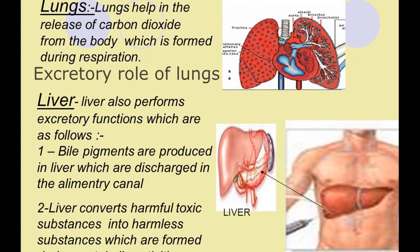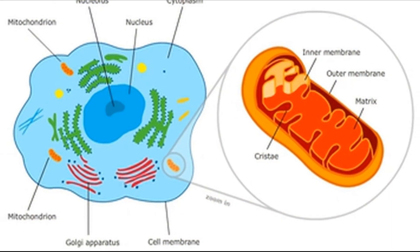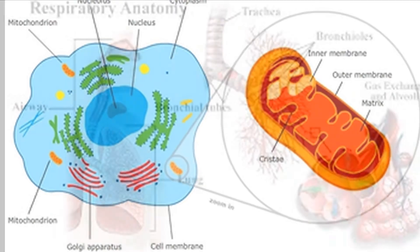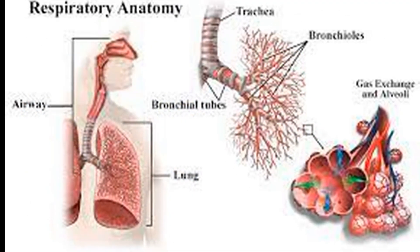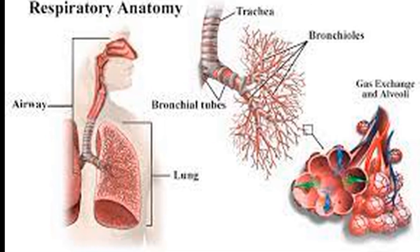Excretory role of lungs: Carbon dioxide is produced during the breakdown of glucose during respiration. This passes from the blood into the lungs and is exhaled through the nose.